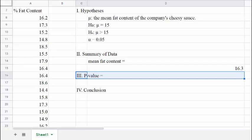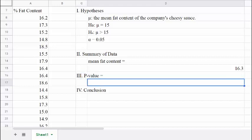In step 3 we calculate the p-value, which is a probability. Here it is the probability of getting a mean at least as large as 16.3%, like we did in the sample, if the true mean for all cheesy sauces is actually 15%. In this situation we can use the z-test formula in Google Sheets to calculate the p-value.